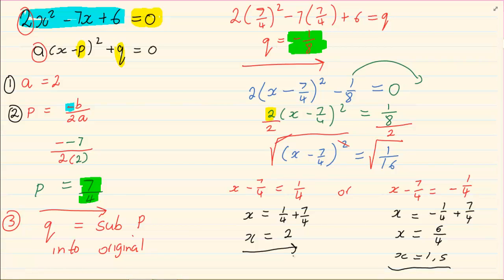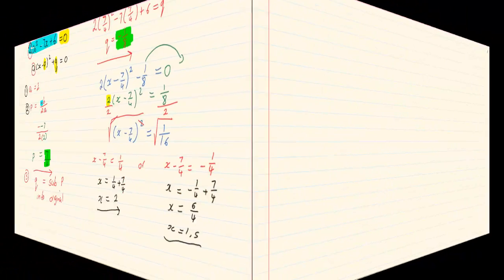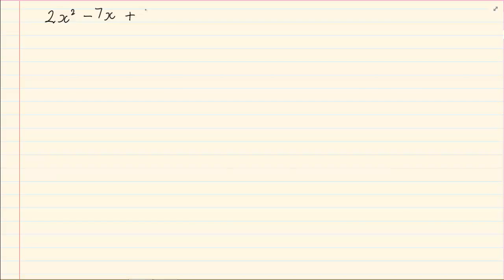Now this is one way of completing the square, but there is another way. You would see that this method is more commonly used amongst older teachers more than the younger, newer teachers. But it is a very helpful method so it is nice to know both. However, if you choose one favourite you can still use that same method throughout your syllabus. Now when you are doing the second method, it is most important that a is always equal to 1.